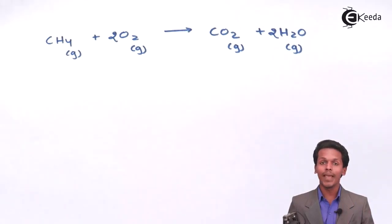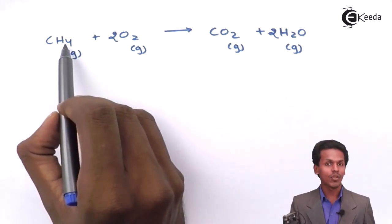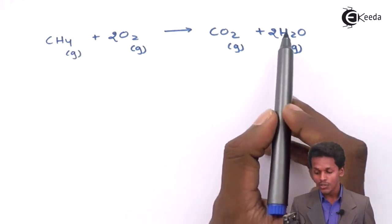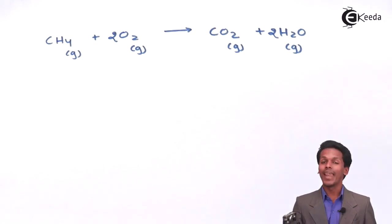So let us see whether the hydrogen is being balanced or not. In the reactant side, as we can see, there are four atoms of hydrogen. While in that of the product side, also there is four atoms of hydrogen. So basically, we have balanced the reaction.